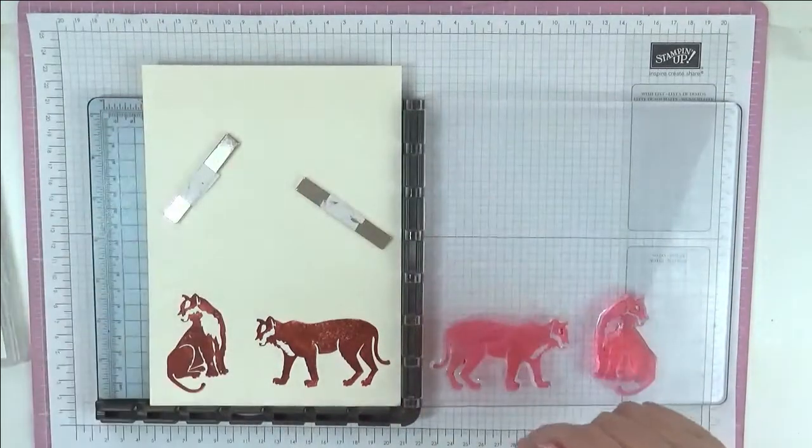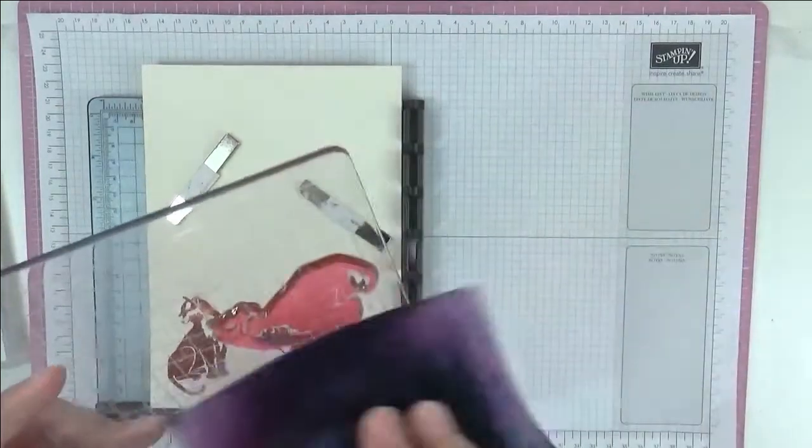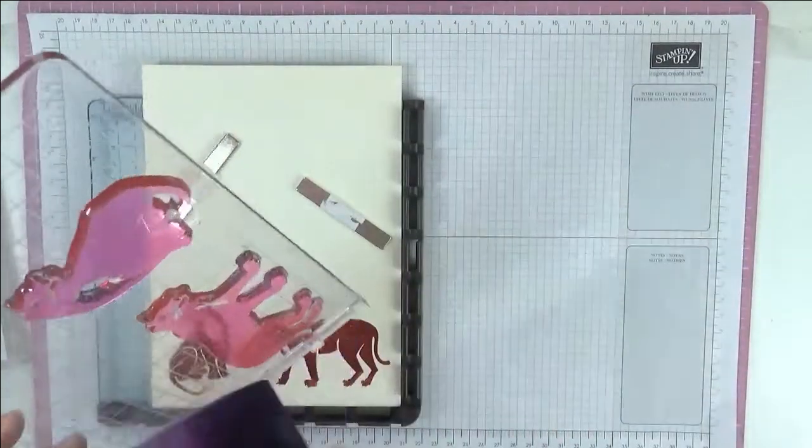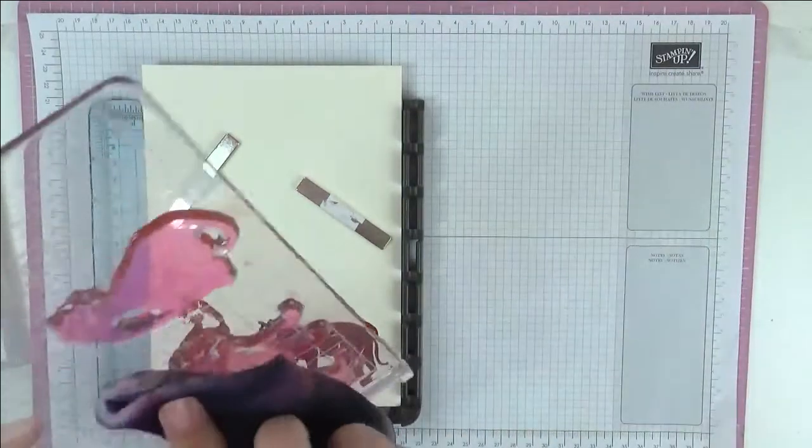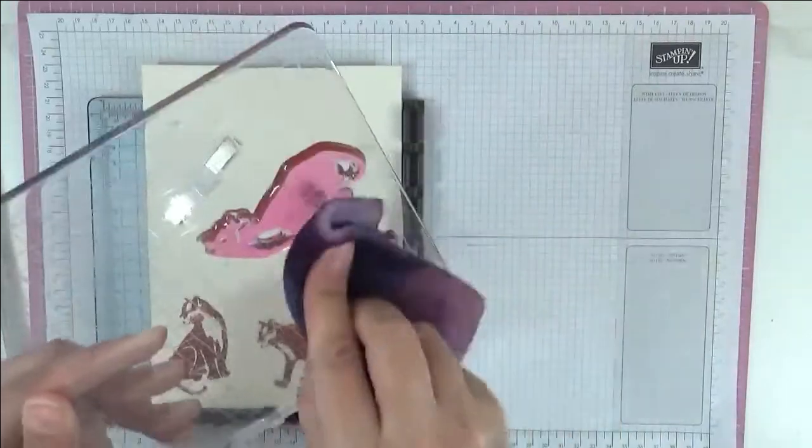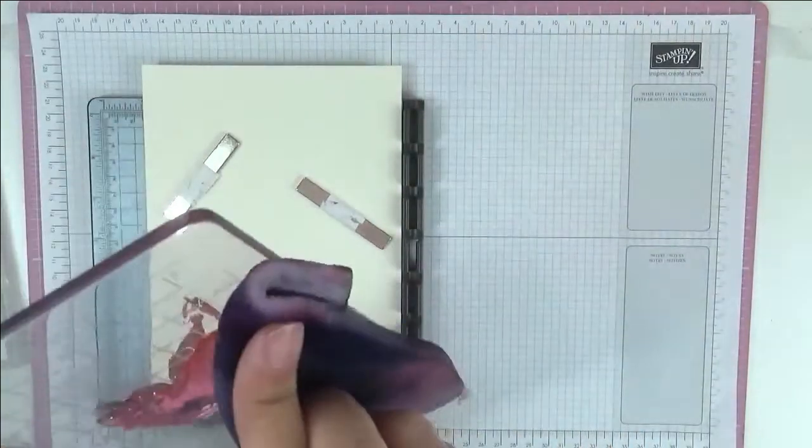So I'm going to give this a clean now and I always just take the plate off. I find it so much easier to do it this way. I seem to get less ink on stuff if I take the plate off and give it a clean this way. I'm just using the Shammy.